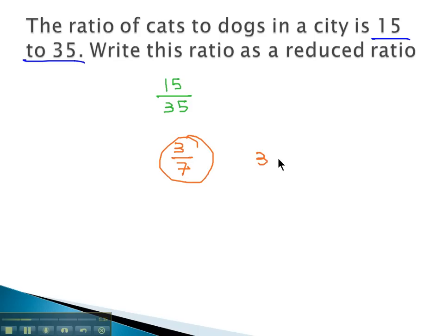Or you might express the ratio as 3 colon 7, or even with the word to in between, 3 to 7. All three of these would be correct for the reduced ratio.